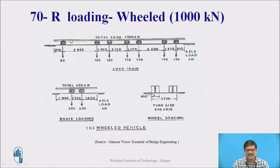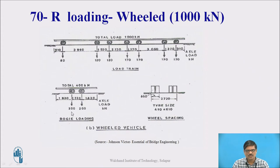The next is IRC class 70R loading, wheeled system, which comprises a total load of 1000 kilonewton. This is basically a train consisting of a number of axles with loads at different axles, visible in the load train picture. There is also a bogie loading for the 70R wheeled system — a total bogie load of 400 kilonewton, split as 200 and 200. The wheel spacing for this system is also shown. The 70R wheeled system has a total magnitude of 1000 kilonewton.